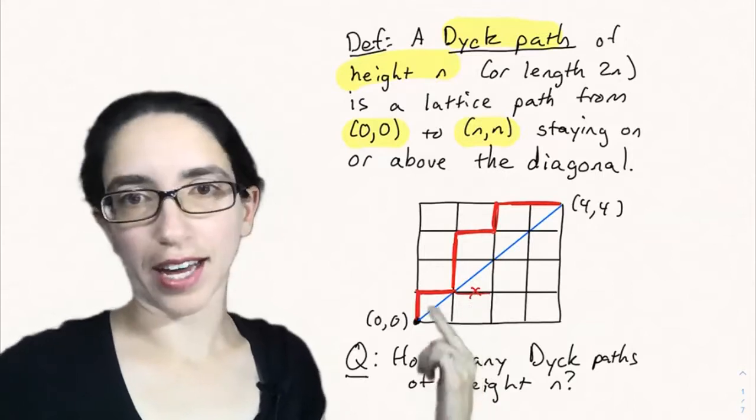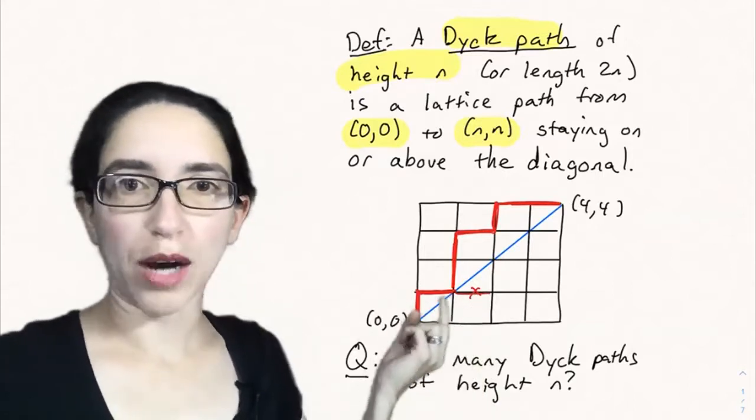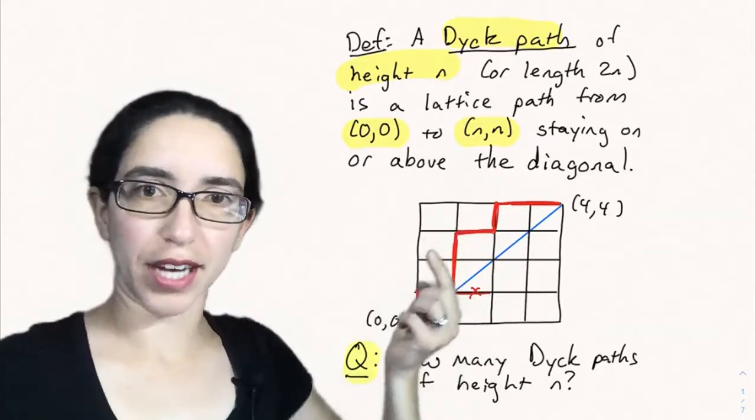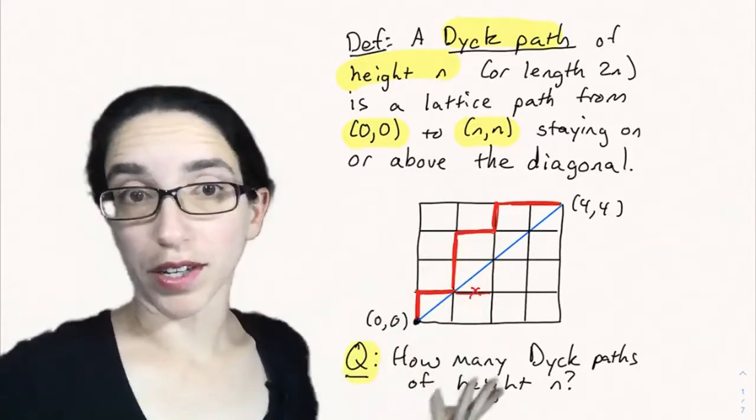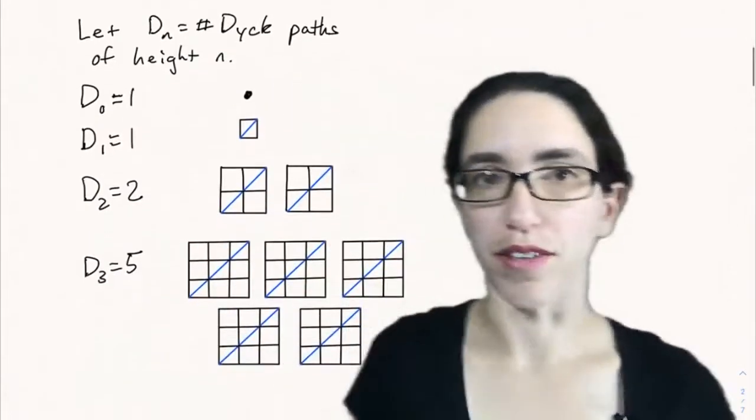You can't have an edge below the diagonal. That's not allowed. So how many paths always stay above this diagonal in general? Can we find a formula for that? How many Dyck paths are there of length n?